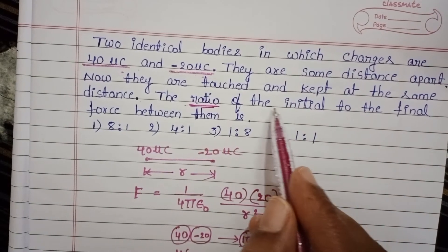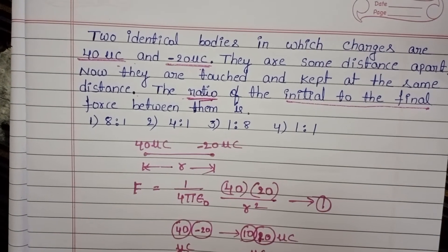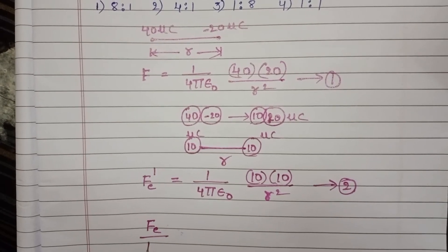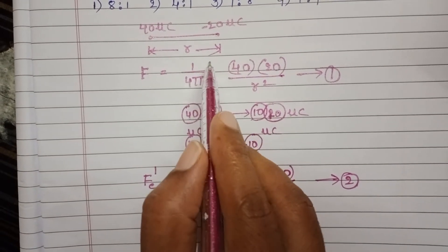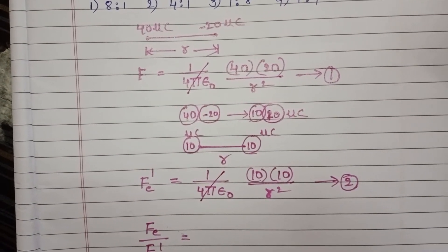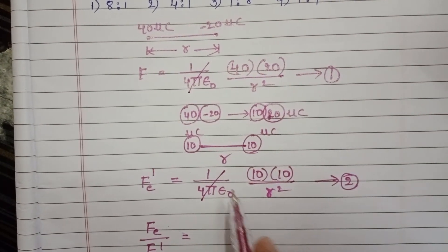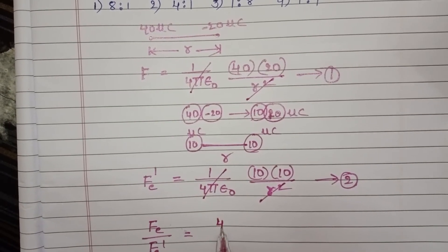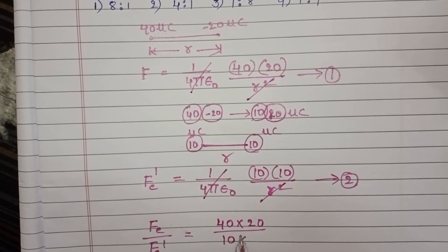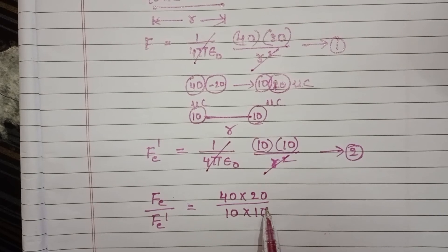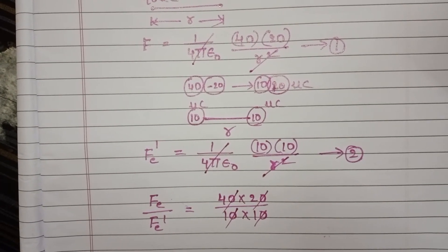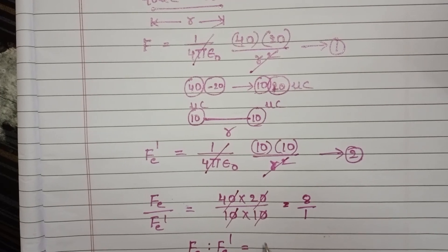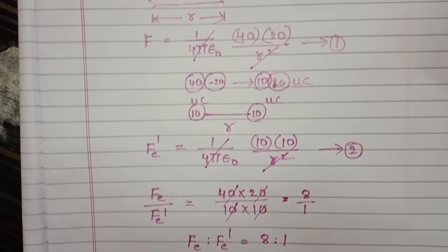Taking the ratio of equation 1 to equation 2 — F_e over F_e dash — the 1 over 4 pi epsilon naught terms cancel, and r squared cancels. This gives 40 into 20 over 10 into 10, which simplifies to 8 over 1. So the ratio of initial to final force is 8:1.